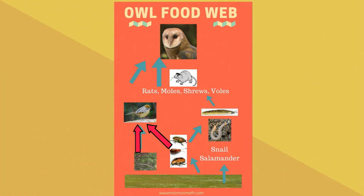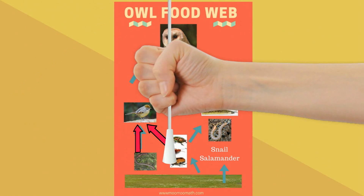The bird will eat worms and insects. I have the insects represented by some beetles which they like to eat. Again, notice which way the arrows are pointing.